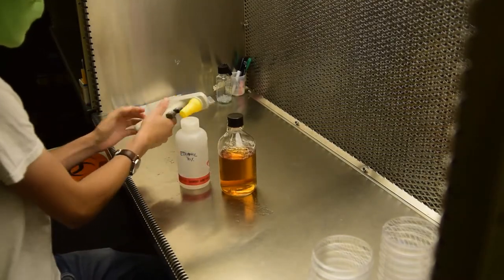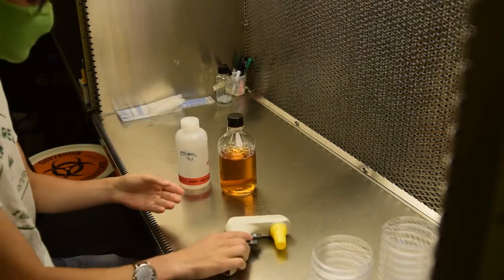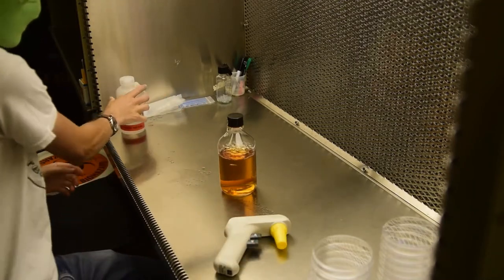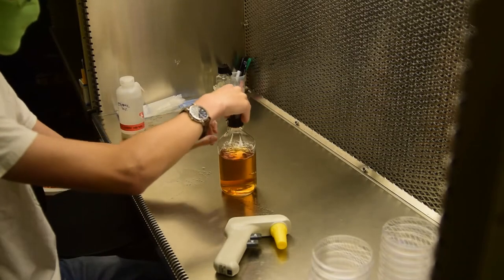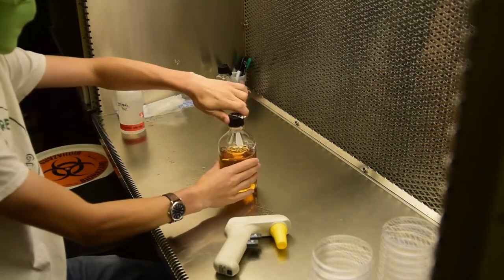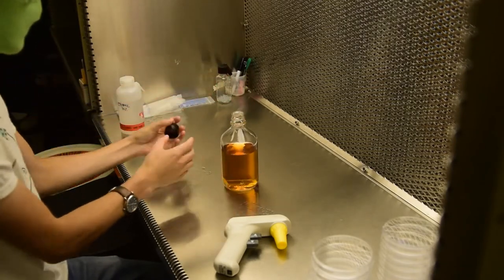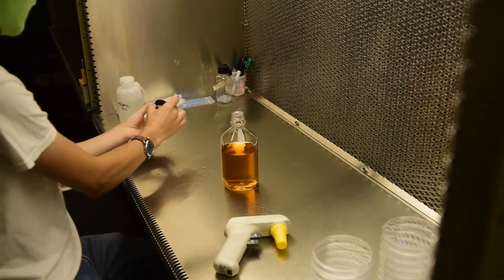We're going to sterilize any tools that we're using in the hood. In this case, this is an automated pipetter. Once we open the bottle, we'll notice that it does rapidly stop boiling. And we put the tape on top, and we're putting the lid to the side.